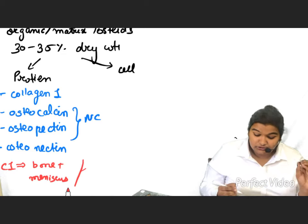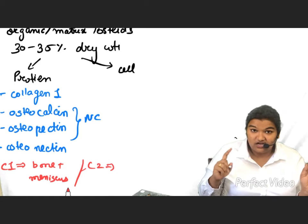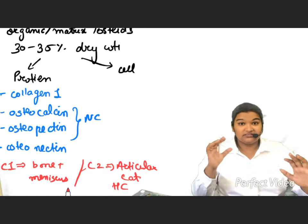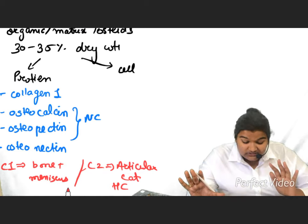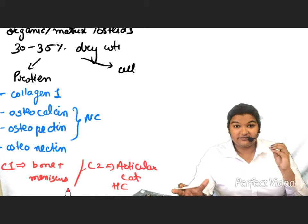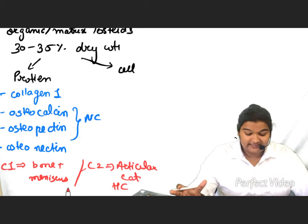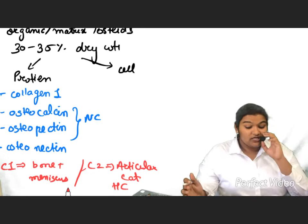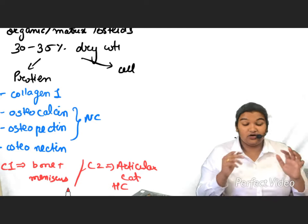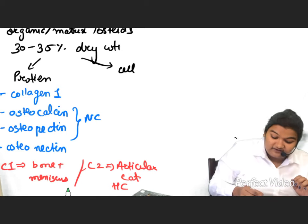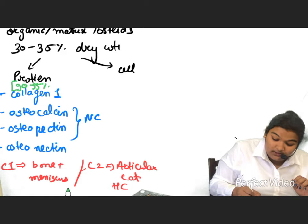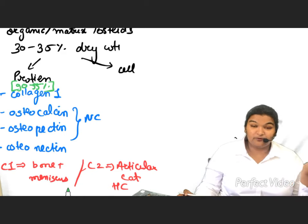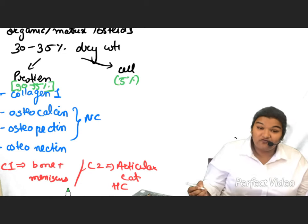Collagen 2 is present in articular cartilage or hyaline cartilage — this is in the context of the skeletal system only, not the whole body. So collagen 1 is in bones and meniscus, and collagen 2 is in articular cartilage. The protein constitutes about 90 to 95% of the whole matrix, and only about 5% is made up of cells.